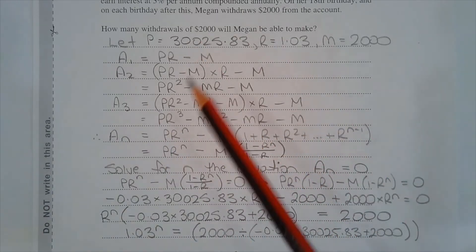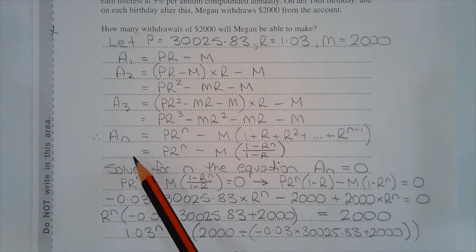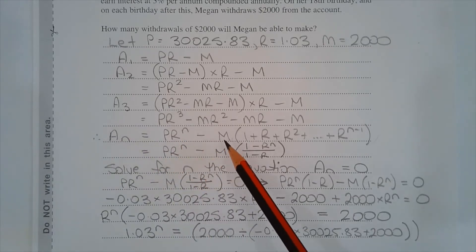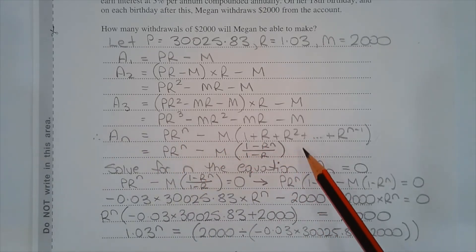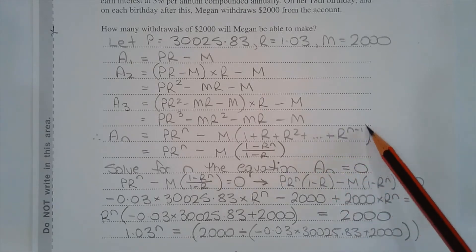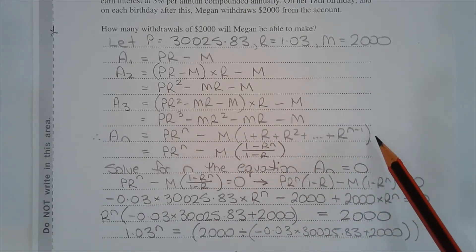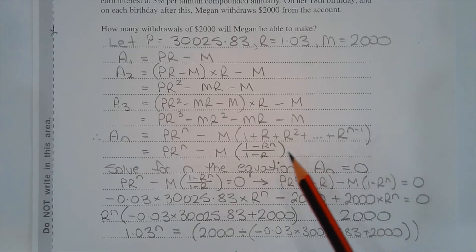And we can generalize a formula from this. We have AN, so the amount of money in Megan's account after n withdrawals of $2,000 is equal to PR to the power of N minus M outside of 1 plus R plus R squared plus dot dot dot plus R to the power of N minus 1. Now here we have a geometric progression, and this is a sum of a geometric progression or geometric series. This can be represented by the formula 1 minus R to the power of N over 1 minus R.